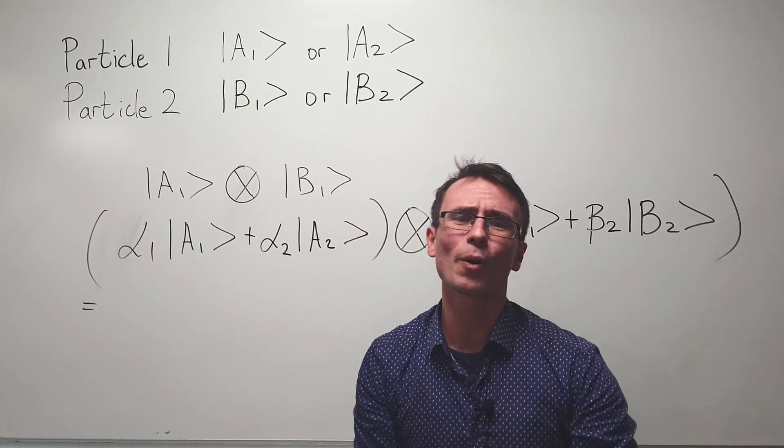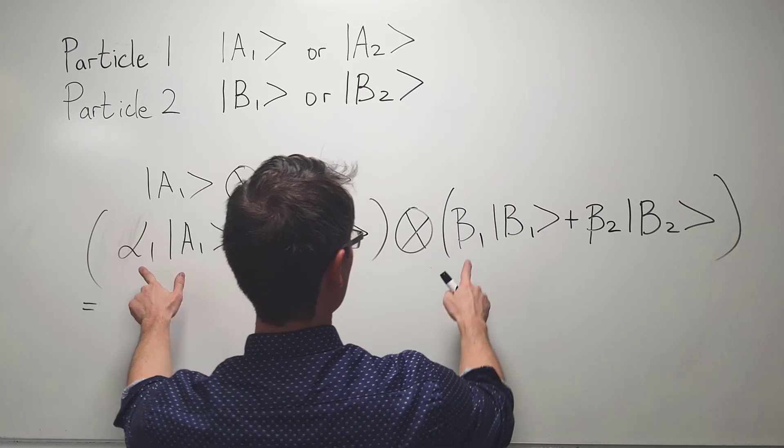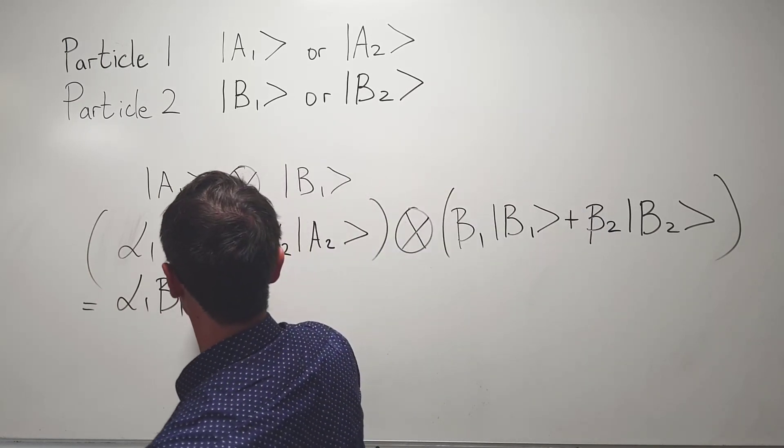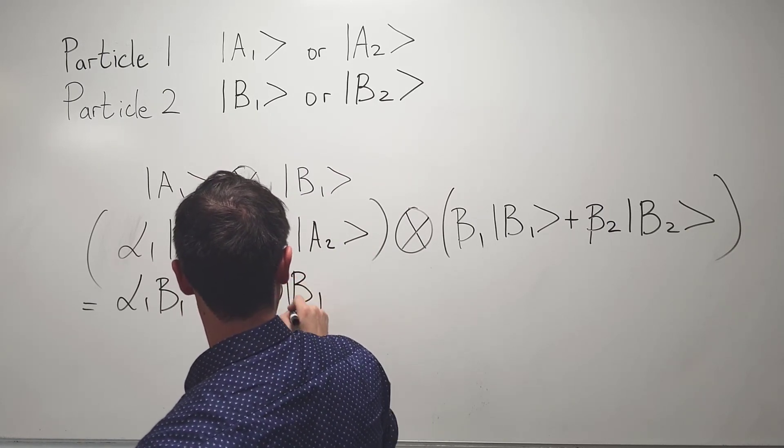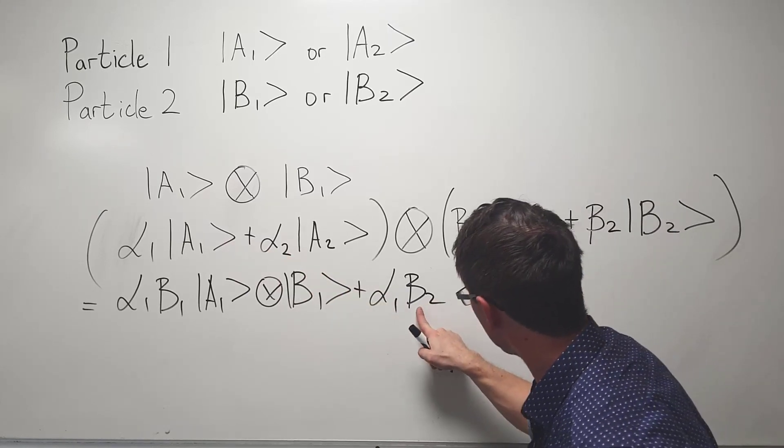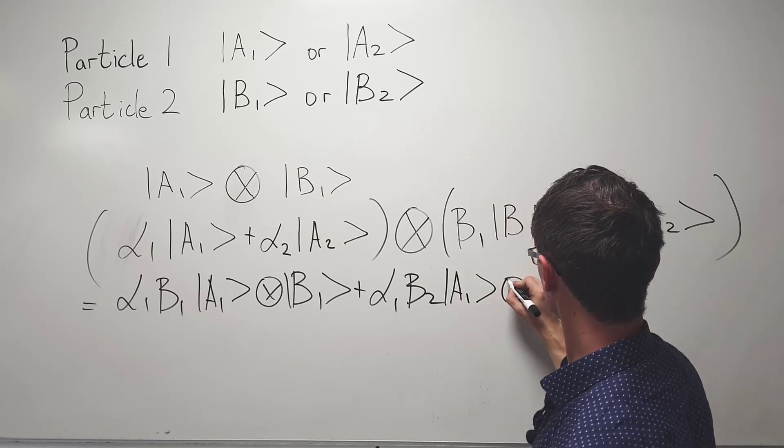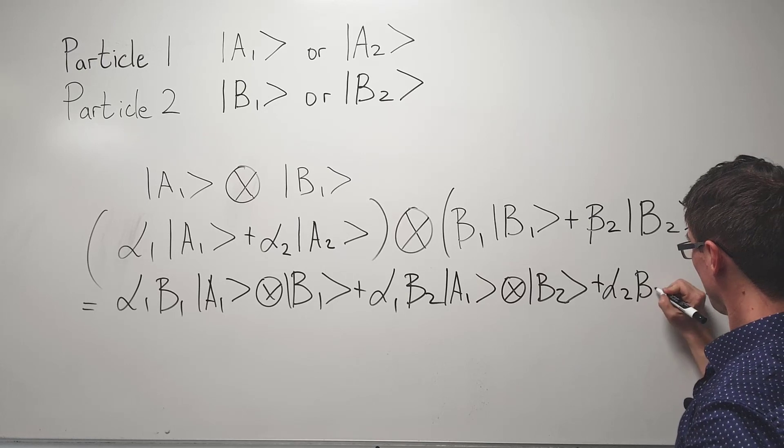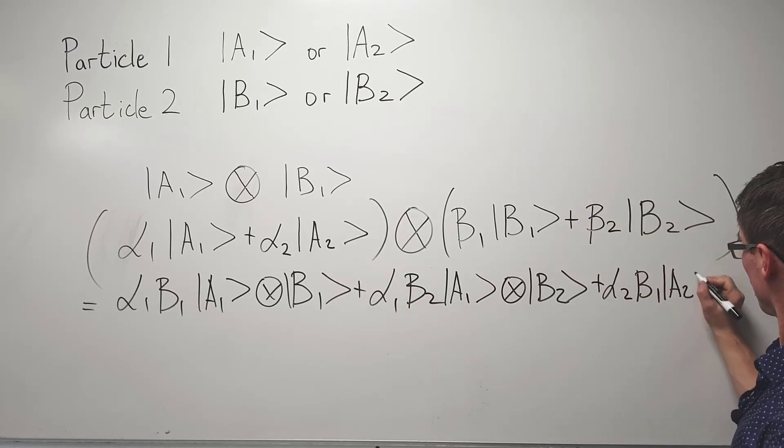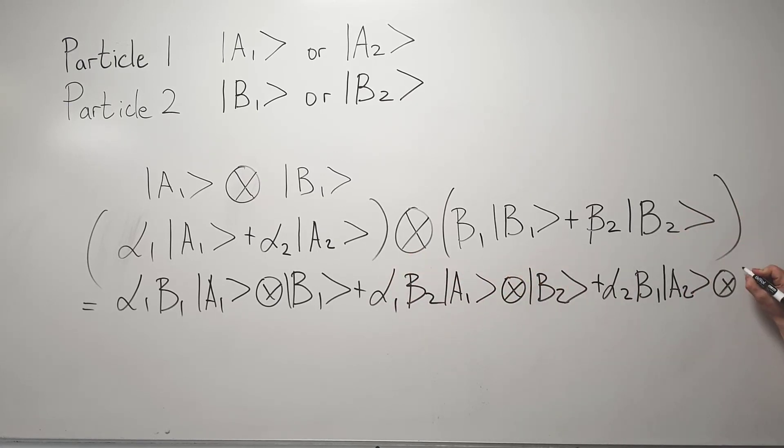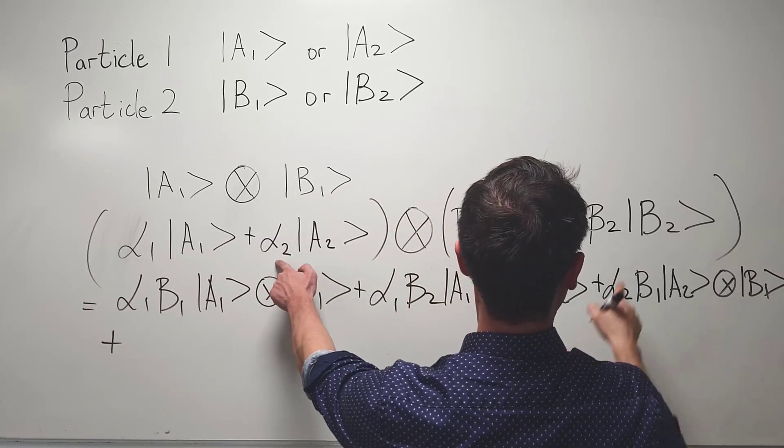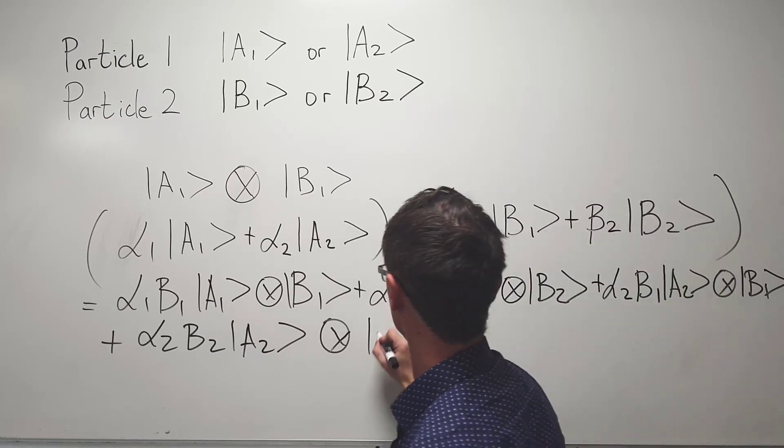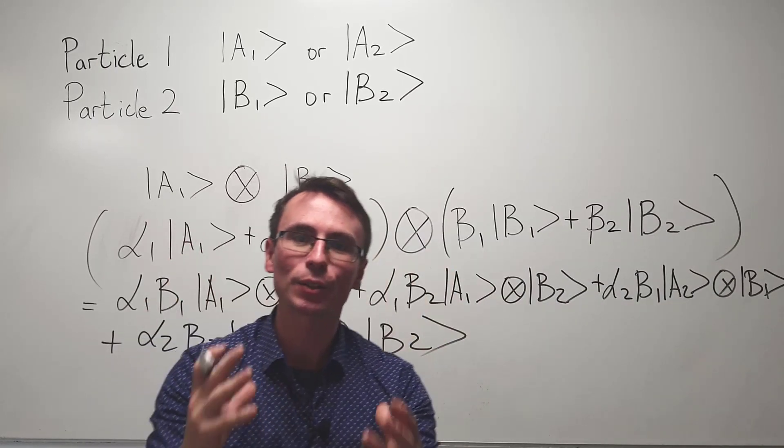We can expand these brackets almost with ordinary multiplication. What we're going to get is alpha one beta one and then a one cross b one, plus alpha one beta two and then a one cross b two, plus alpha two beta one and then a two tensor product b one, and the final one will be alpha two beta two a two tensor product b two. This here is the most general state that we can write.